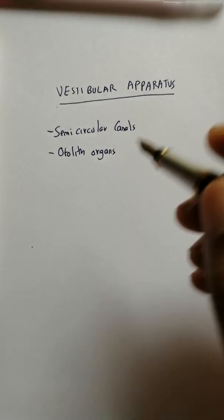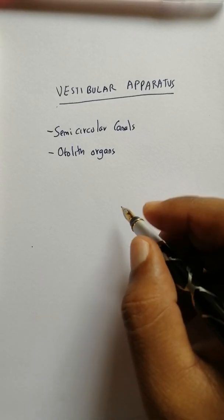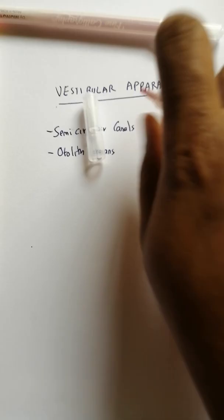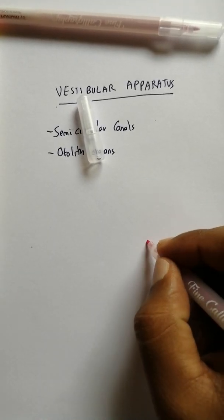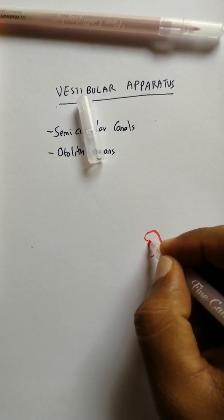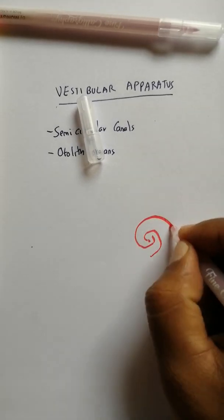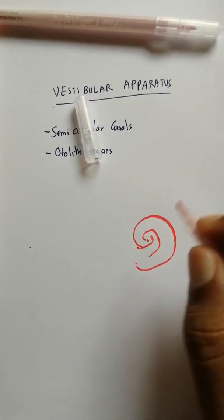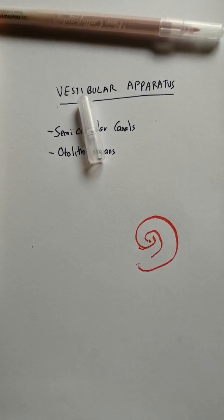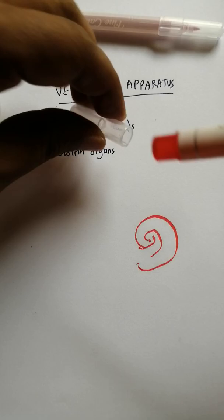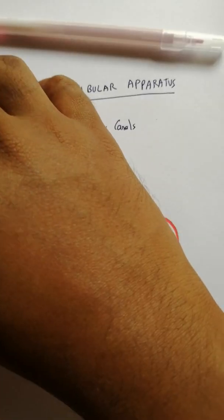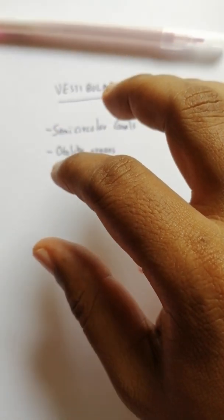Since you have studied the inner ear, you know you have the cochlea, right? So near the cochlea you have the vestibular apparatus.